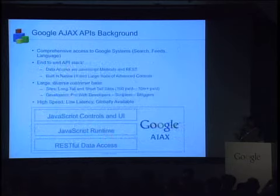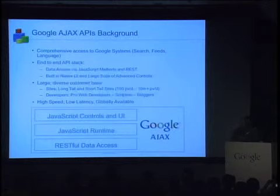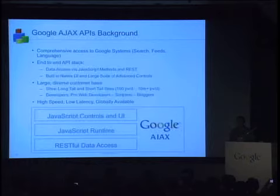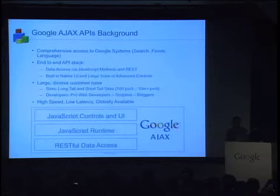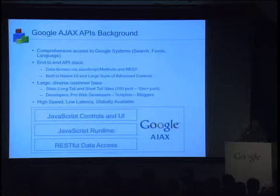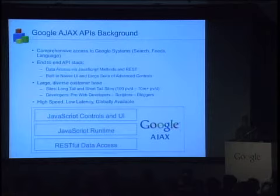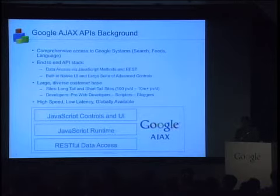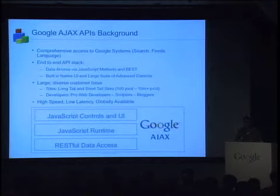In terms of background: it's access to Google systems, starting with search, then feeds and language, with more likely coming. We've had an overwhelming response to these APIs. They're very fast and globally available. The UI controls are also well-liked because they can be styled and integrated. A lot of big-time publishers have adopted this code because their designers can style them any way they want and blend them into the page. There are lots of use cases — pro developers, scripters, long tail, short tail — all over the map.